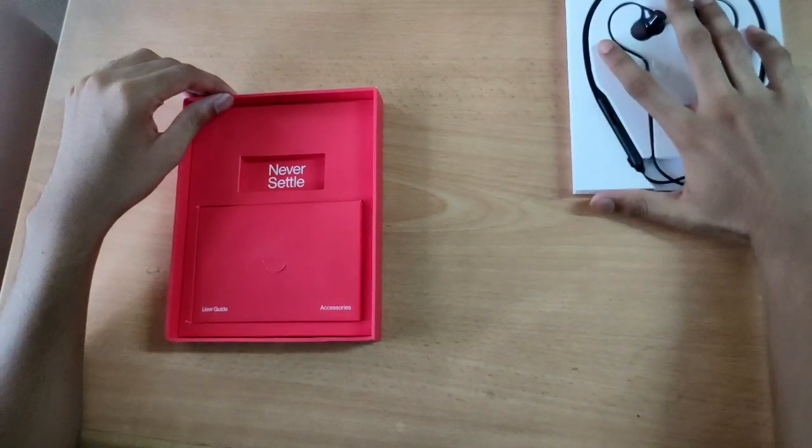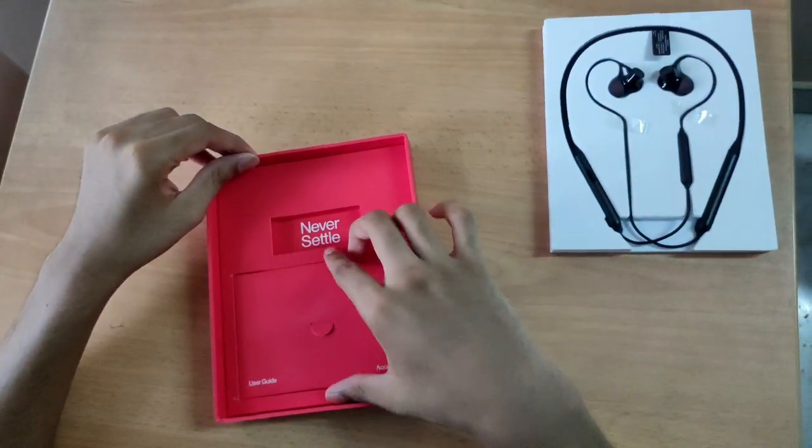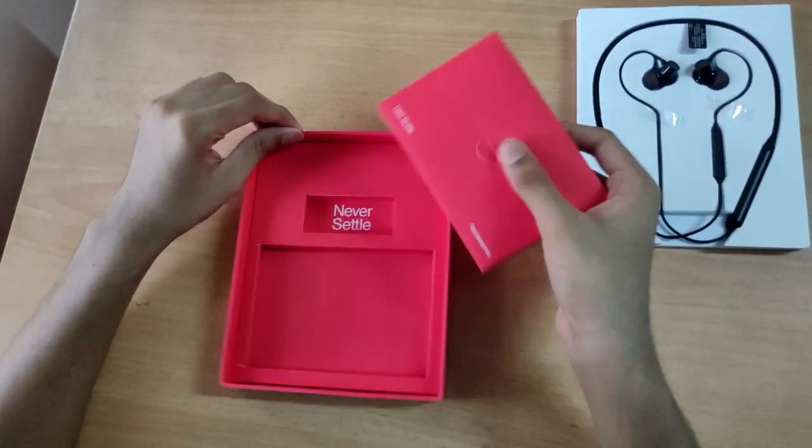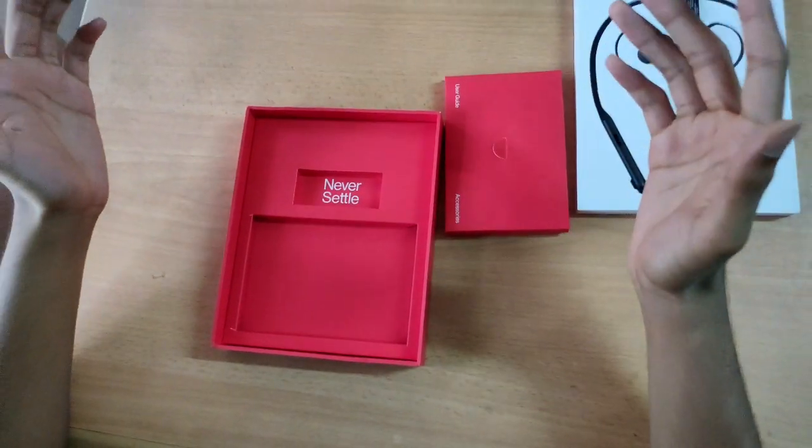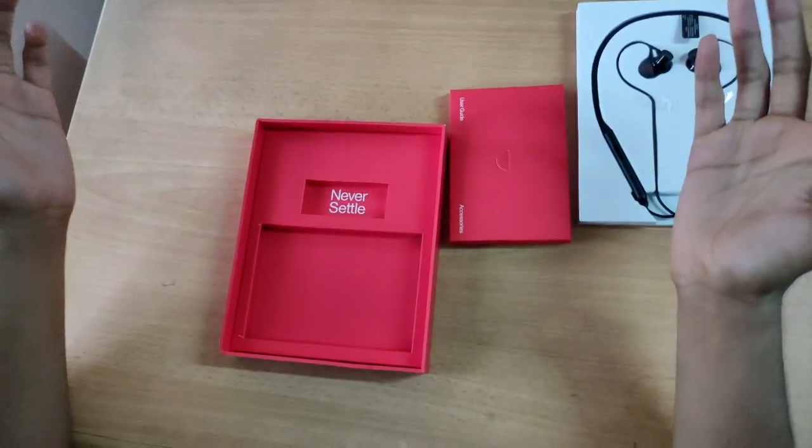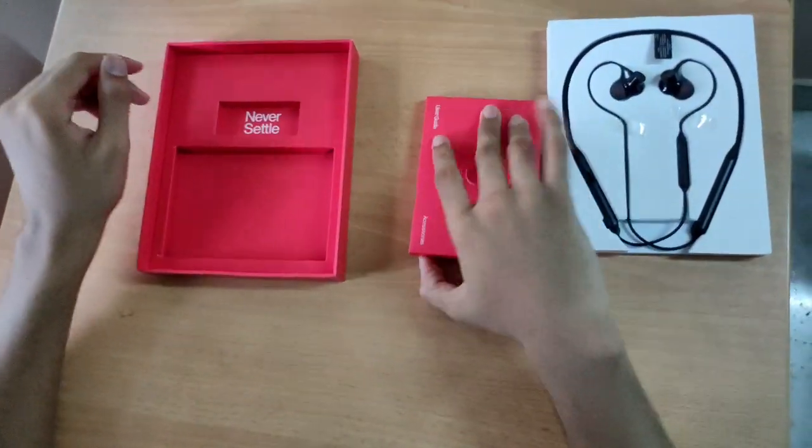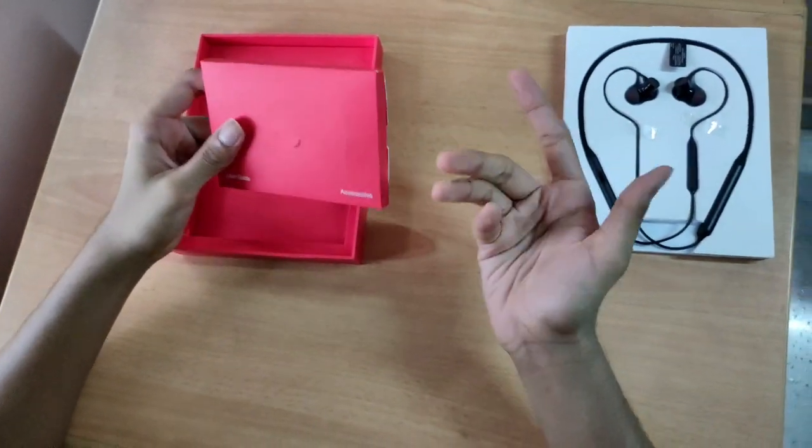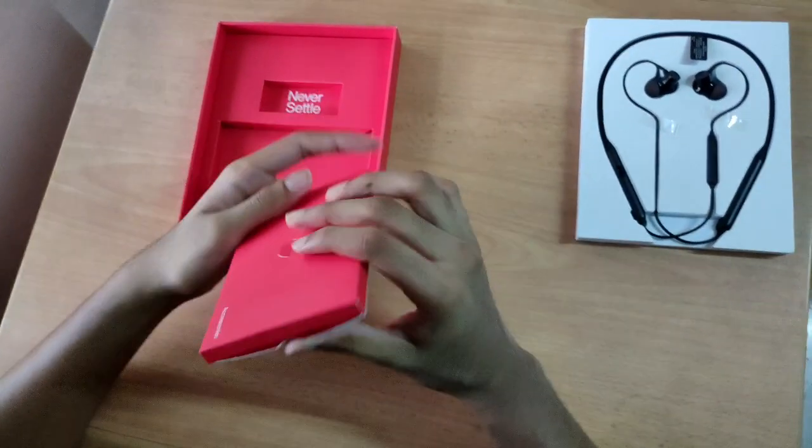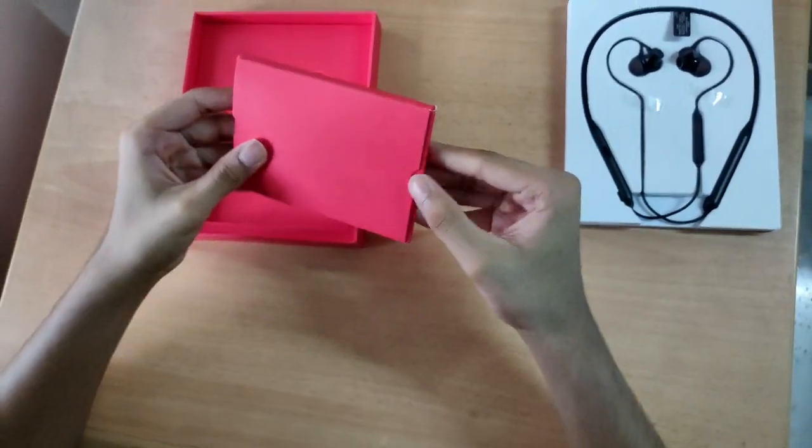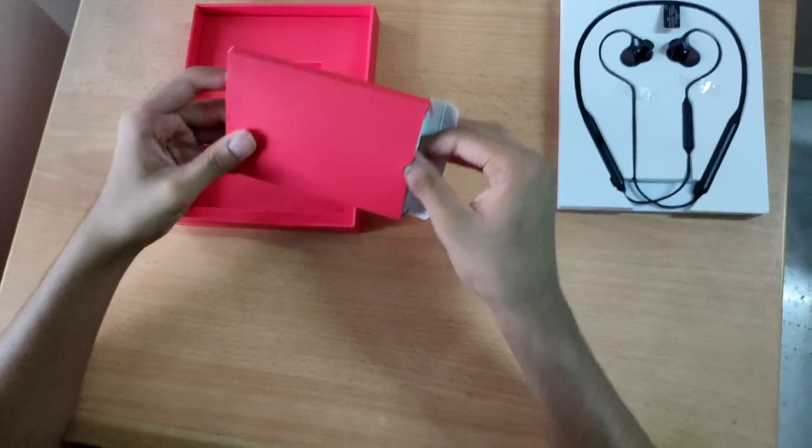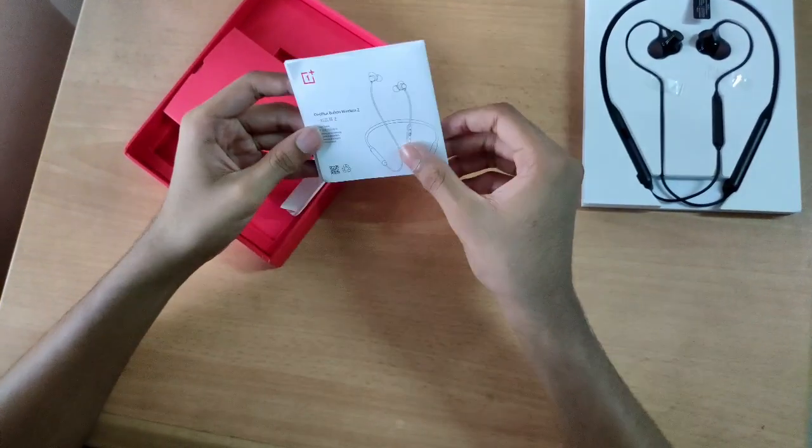Let's open the user guide. It's like a normal OnePlus unboxing experience - you can see the slogan of their brand, 'Never Settle'. You can see the user guide and the accessories.